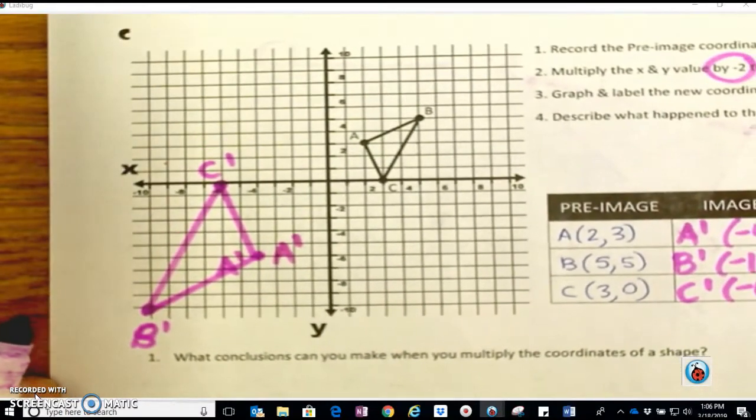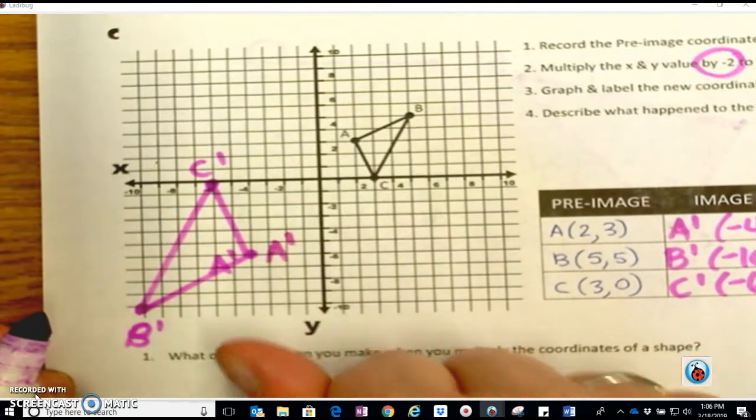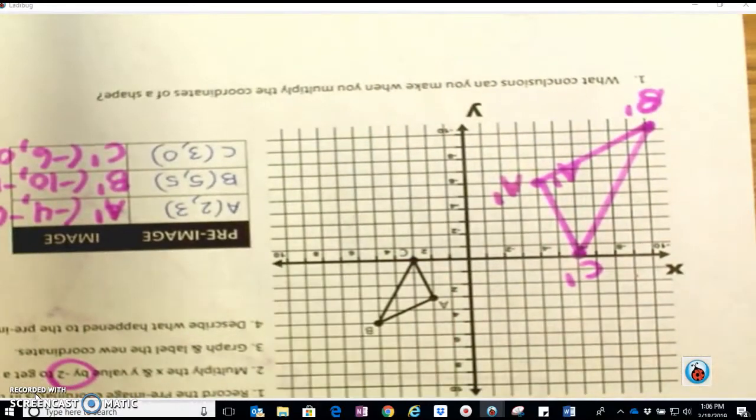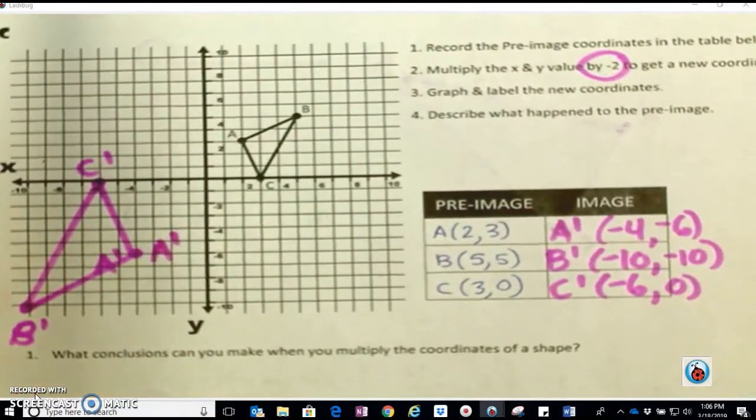But here we notice that my shape has completely turned around. If I were to kind of turn it all the way around, now it looks like what I originally had. So it's kind of done a 180.